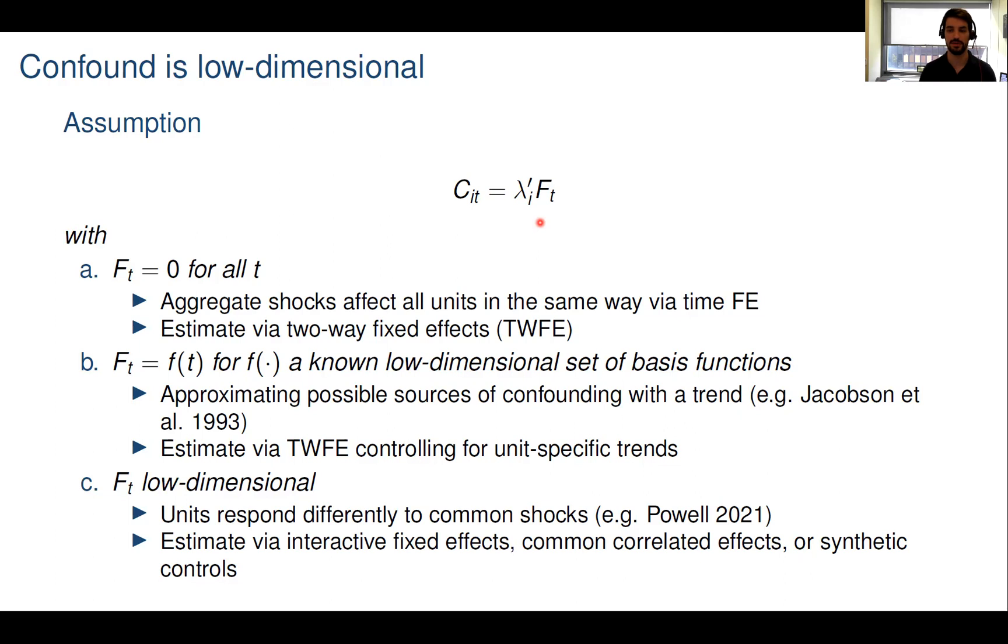It therefore rules out models in which the influence of aggregate factors may depend on unit-level features such as the sector composition of the local economy. For example, suppose we're estimating the effect of the minimum wage at the state level on the youth unemployment rate. The confound could be the overall macroeconomic condition in the US, in the sense that states tend to increase the minimum wage when the US economy is strong. To do so in case A, we require this overall macroeconomic condition to have similar effects on the youth employment rate for all states.